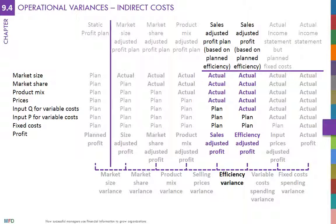1,000 minus 1,200 times the budgeted allocation rate equals 200 times the budgeted allocation rate — unfavorable. In this case, the variance would be unfavorable because more hours were used than needed. Notice that the efficiency variance for indirect costs is associated with how efficiently the allocation base was used.